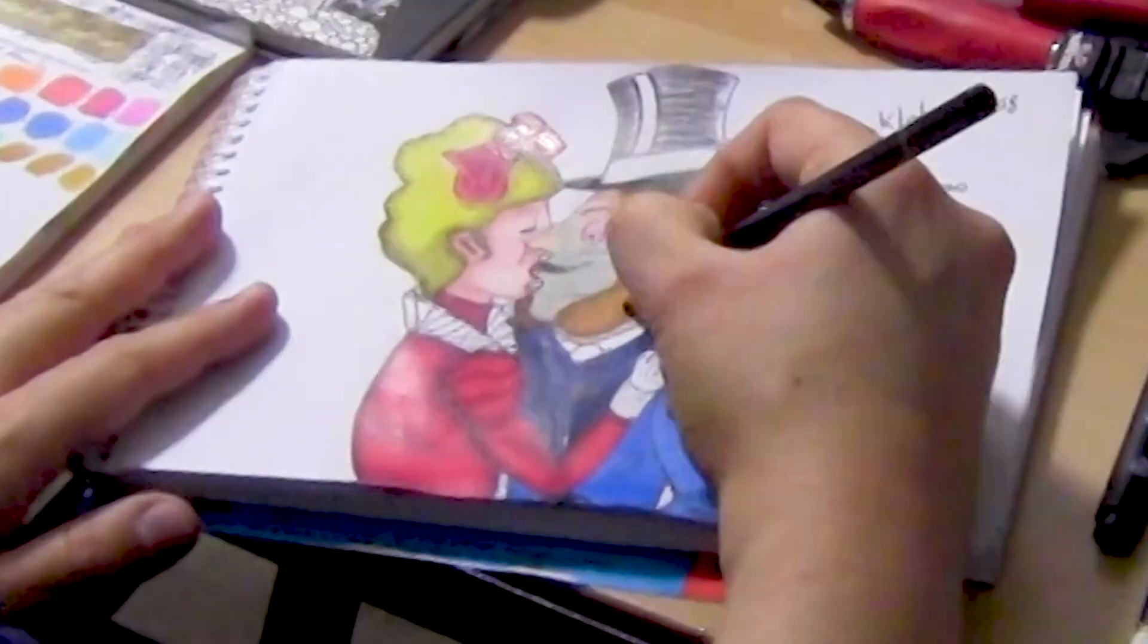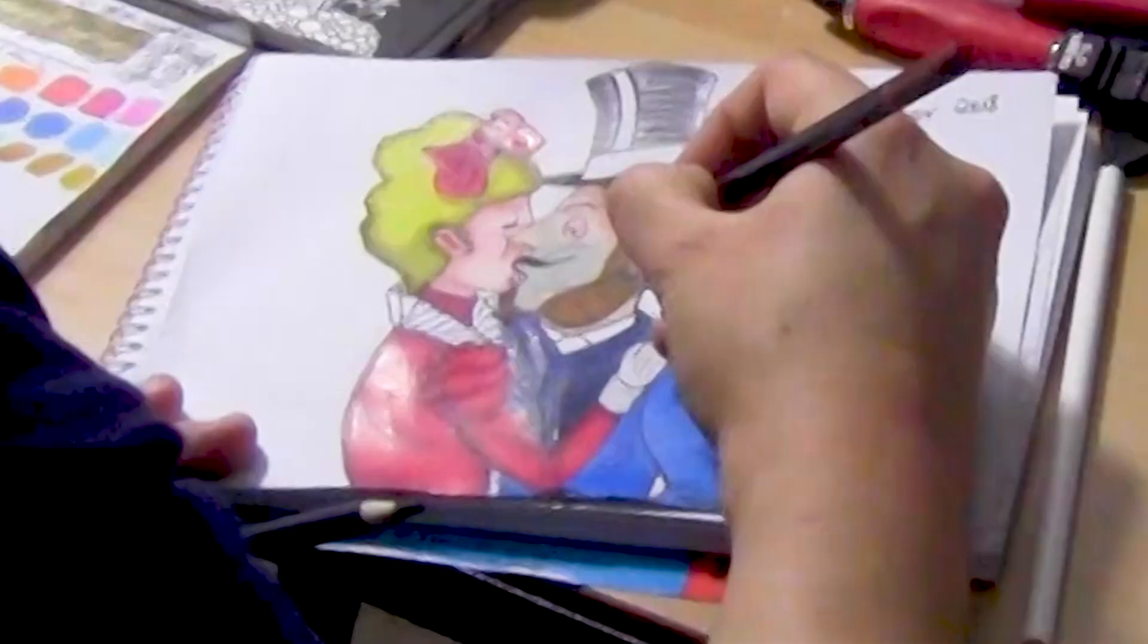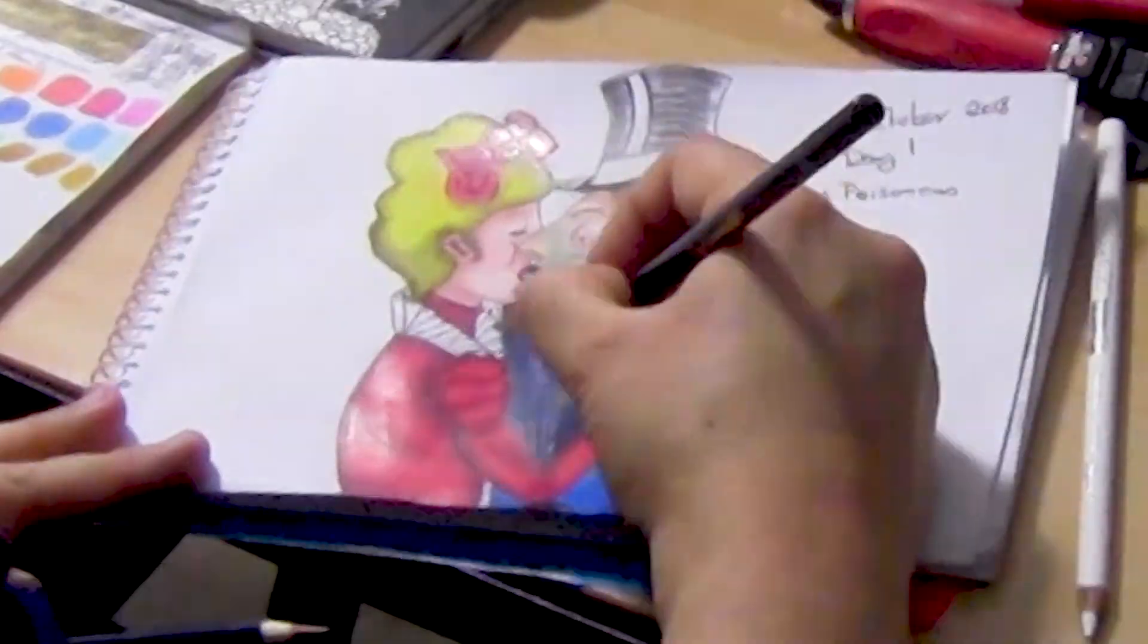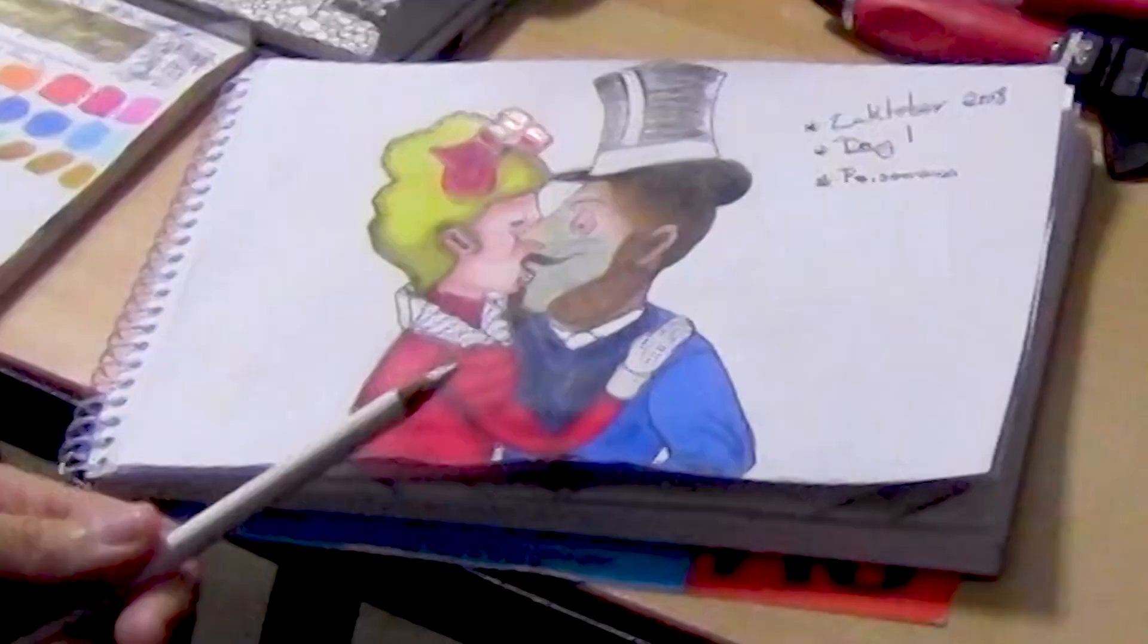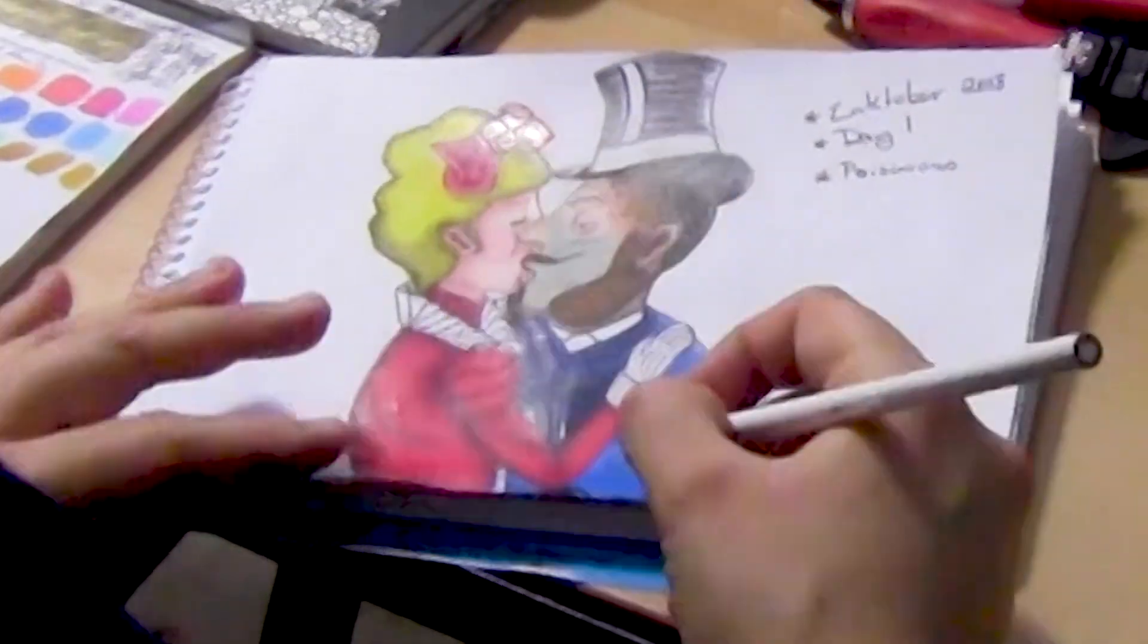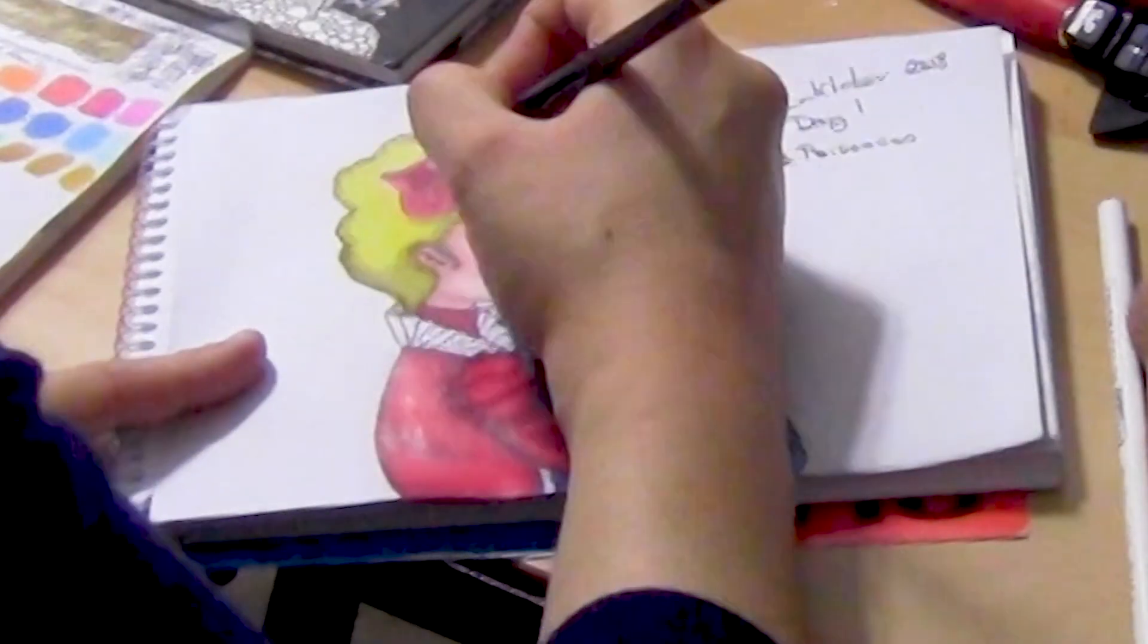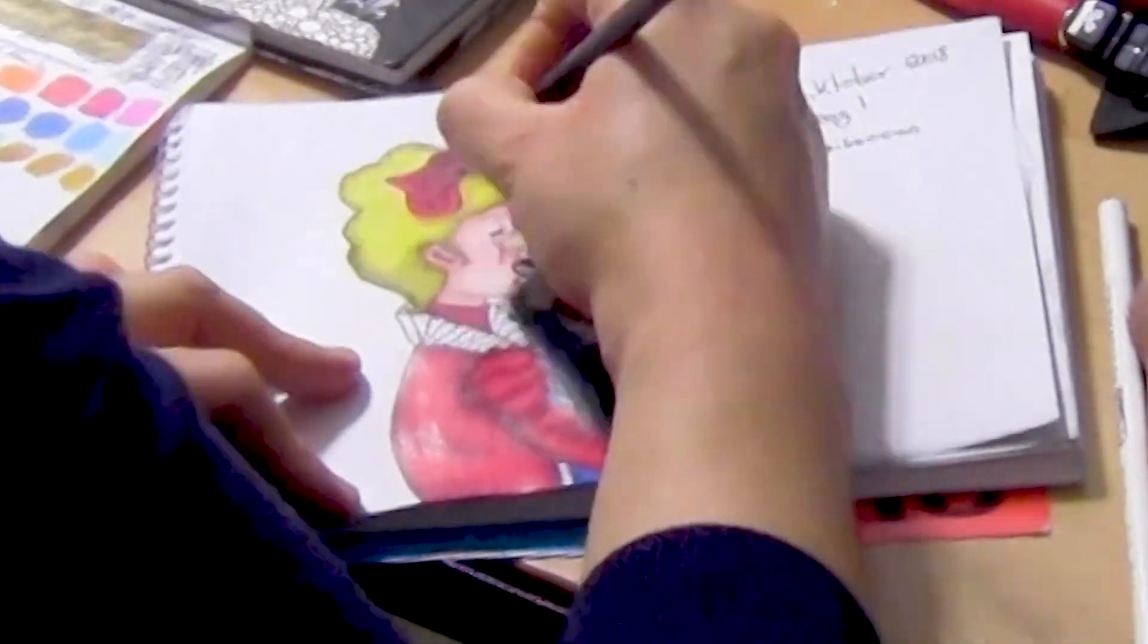You might notice in the video I keep pulling up this little booklet, if you will. And that's because that's where I used that booklet to do a color chart for the colored pencils I was using. And I kept referring to it so I could mix the colors. That's why you keep seeing it.